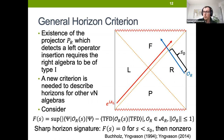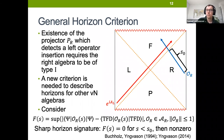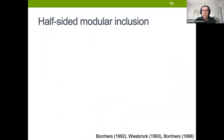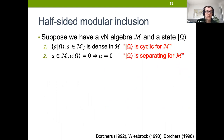That's the story about no sharp horizons at finite N. Now I'll review half-sided modular inclusion. Some of this should be familiar from Hong's talk last Thursday, but I'll remind everybody of this story.